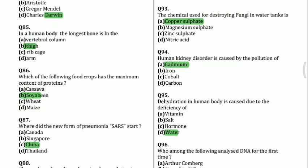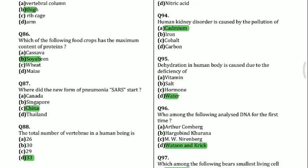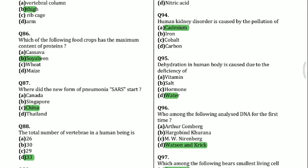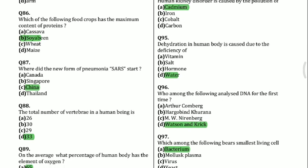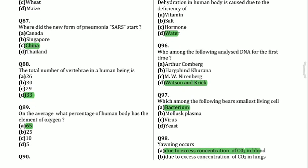Question 85: In the human body the longest bone is in the thigh. Question 86: Which of the following food crops has the maximum content of proteins? Soybean. Question 87: Where did the new form of pneumonia SARS start? China. Question 88: The total number of vertebrae in a human being is 33. Question 89: On average, what percentage of the human body has the element oxygen? 65 percent.